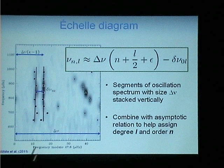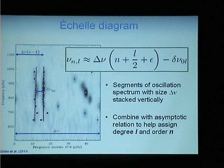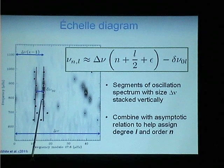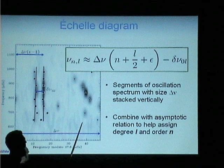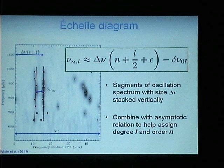This is an Echelle diagram, where we cut the frequency power spectrum into chunks the size of the large frequency separation — that very regular spacing — and stack them on top of each other. When you do that, it assists in identifying the geometry of the modes: oscillation modes with the same spherical degree line up in vertical ridges. You get the radial and quadrupole modes on one side of the diagram and the dipole modes on the other. This is an evolved subgiant, so you get some interesting behavior on the dipole modes. The epsilon quantity — this phase — determines the absolute zero point of the diagram.